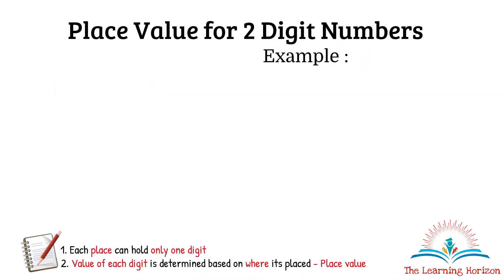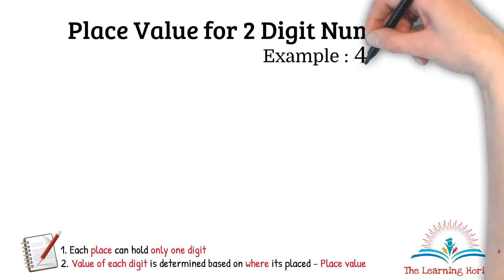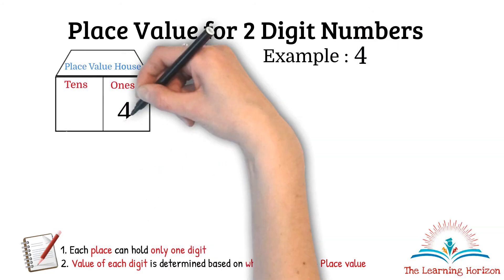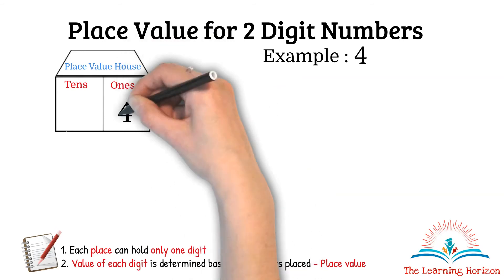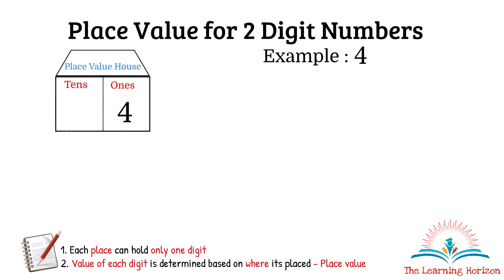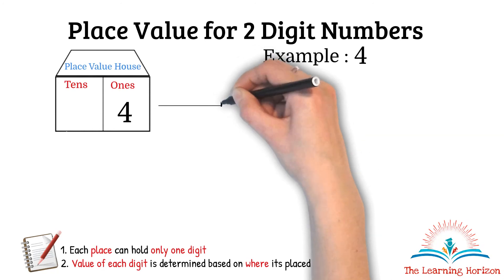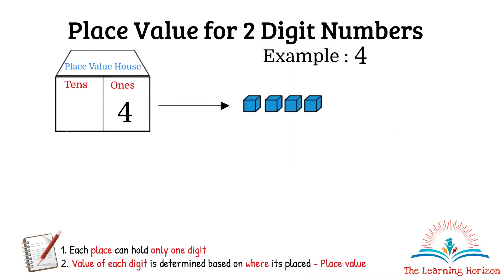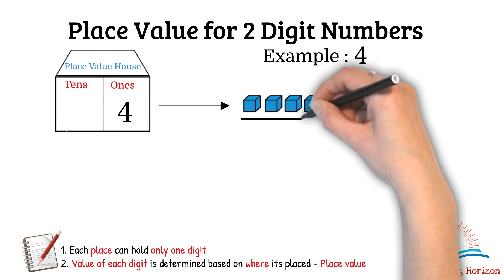I will consider the digit 4. First I will place it in the ones place. Four in the ones place means four ones, which is equal to four ones blocks. Remember, each ones block is equal to one, so four ones is equal to four.